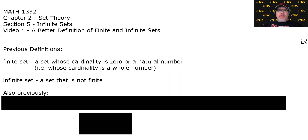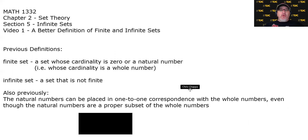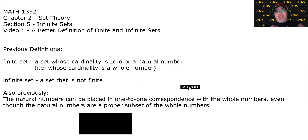Previously, we had made the observation that the natural numbers — the numbers that start with one — can be placed in a one-to-one correspondence with the whole numbers, the numbers that start with zero, even though the natural numbers are a proper subset of the whole numbers.